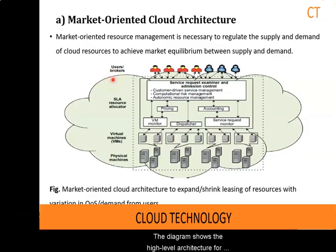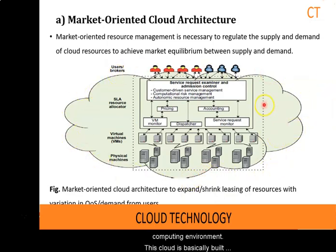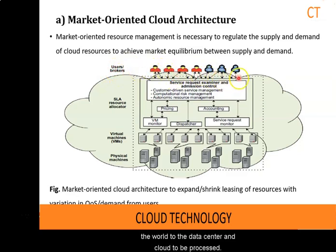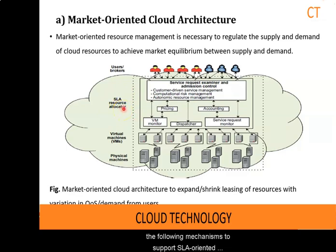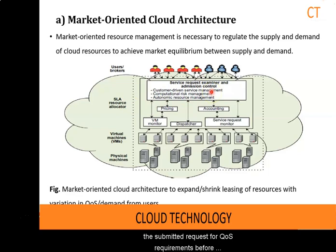The diagram shows the high-level architecture for supporting market-oriented resource allocation in a cloud computing environment. This cloud is built with the following entities: users or brokers acting on users' behalf submit service requests from anywhere in the world to the data center and cloud to be processed. The SLA resource allocator acts as the interface between the data center or cloud service provider and external user brokers. It requires the interaction of several mechanisms to support SLA-oriented resource management. When a service request is first submitted, the service request examiner interprets the submitted request for QoS requirements before determining whether to accept or reject it.